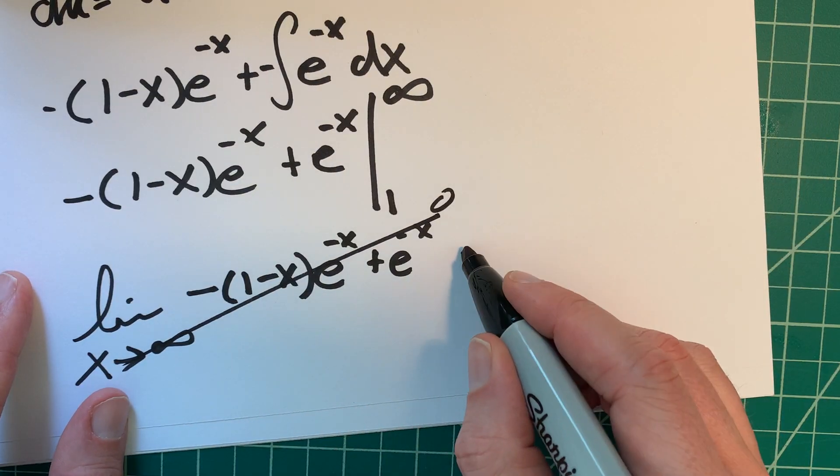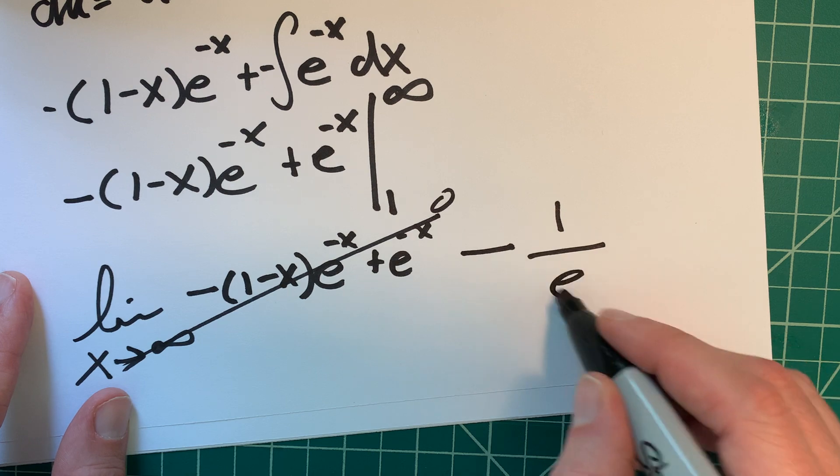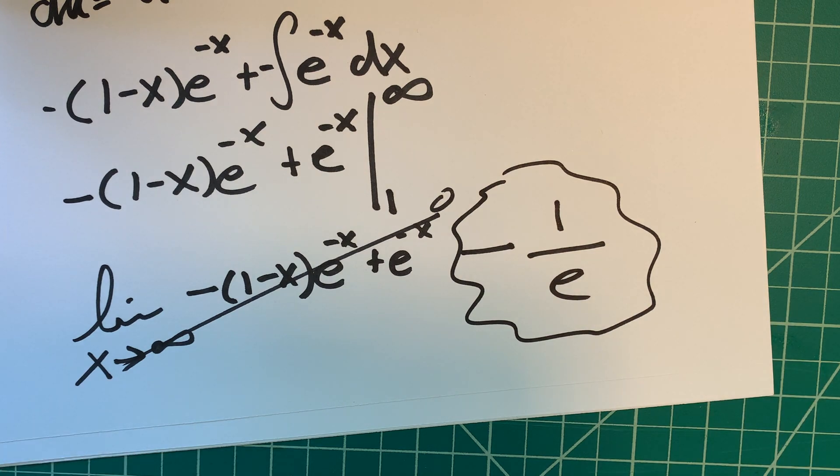So that means it's just going to be minus 1 over e. Because we just had e. So I think this must be the solution to that problem.